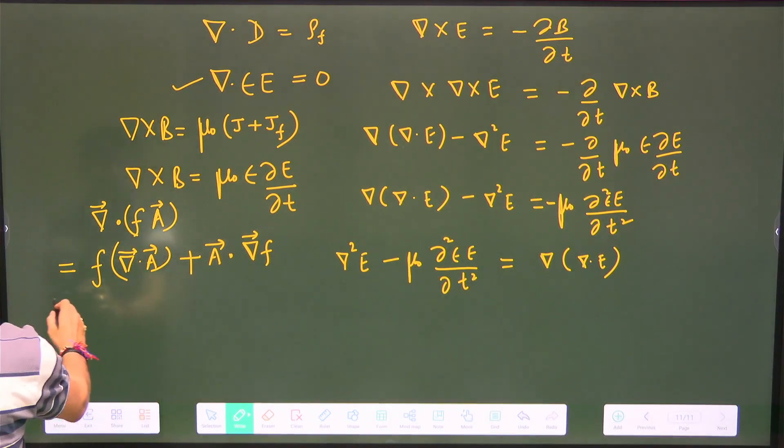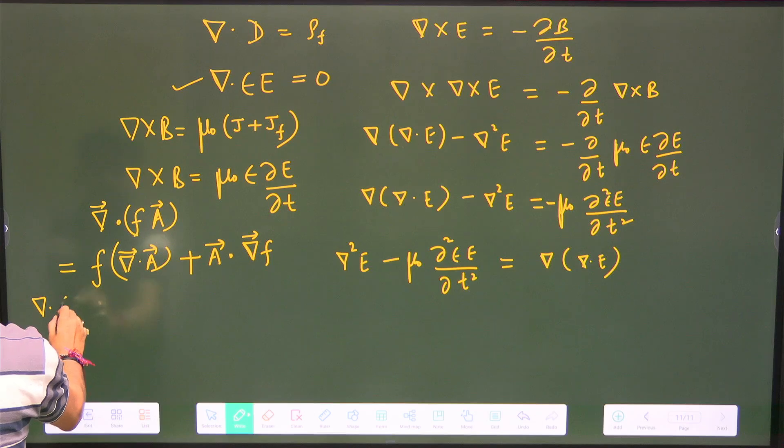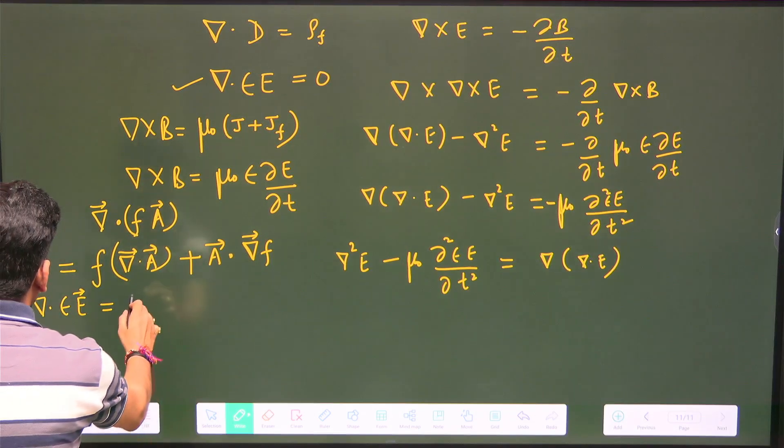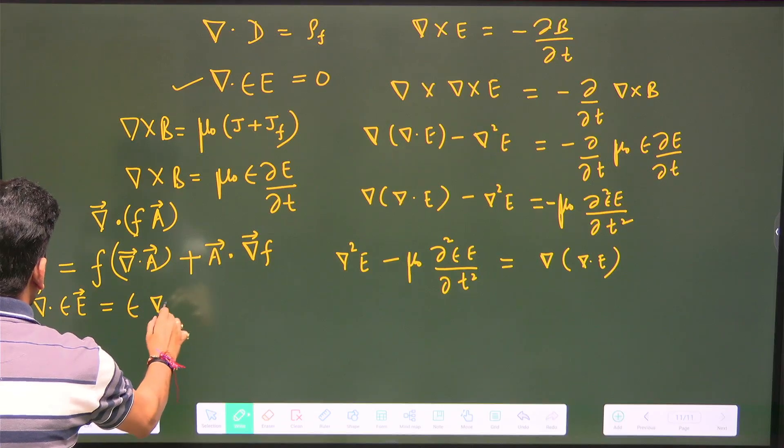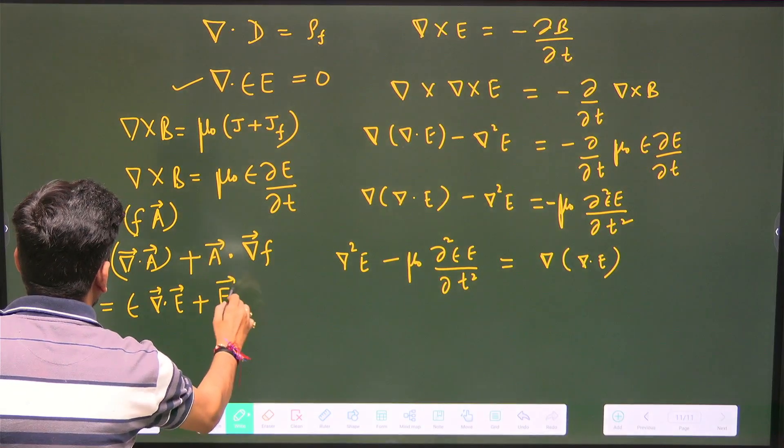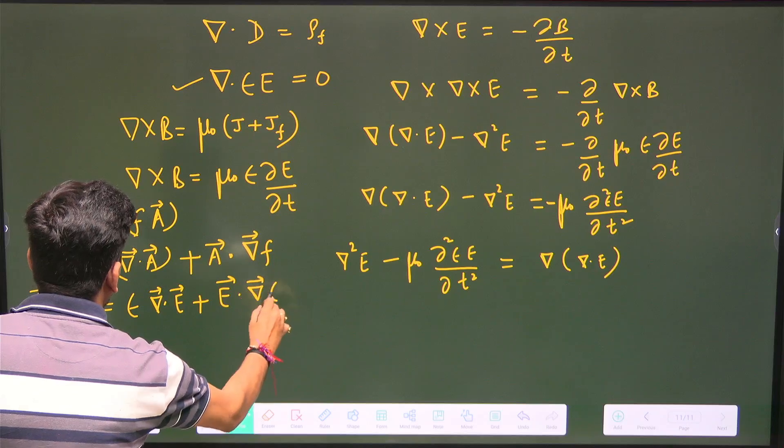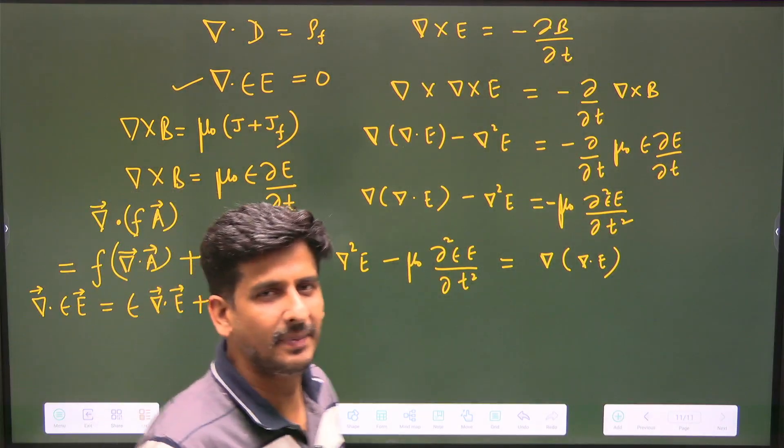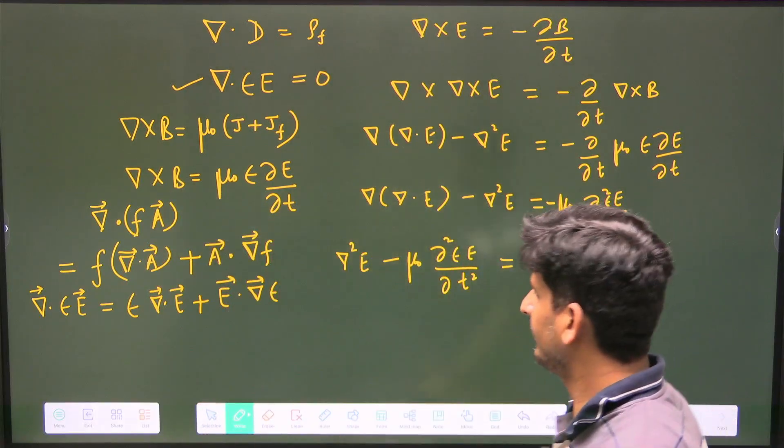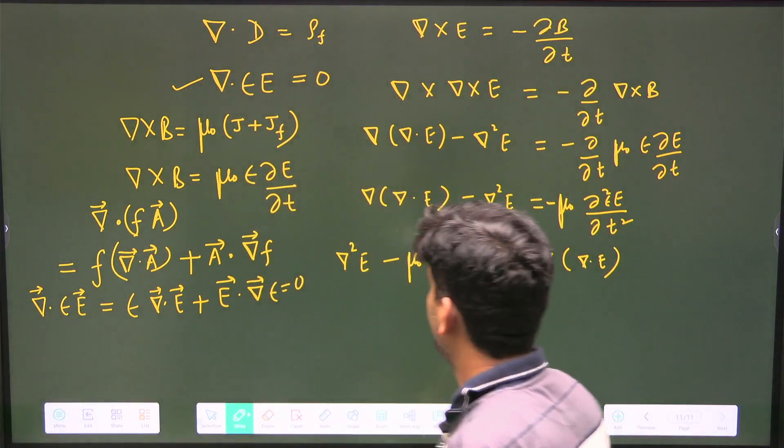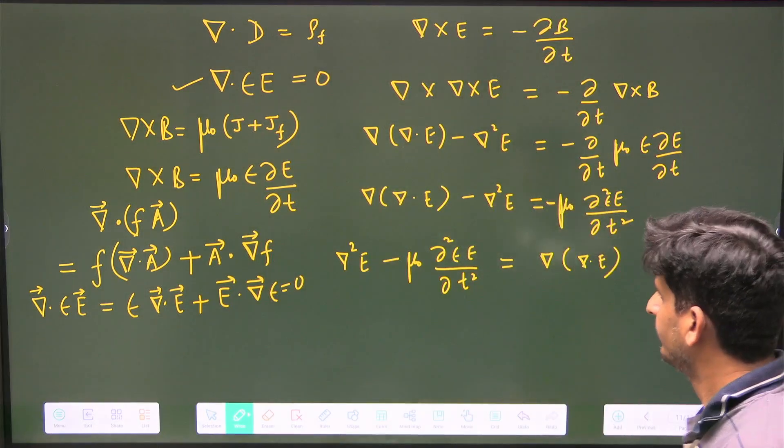Now just apply it to that. It will become divergence of εE is equal to ε divergence of electric field plus electric field dot grad of ε. Because ε has spatial dependence, grad of ε will not be zero, but this overall is zero because of free charge density being zero.